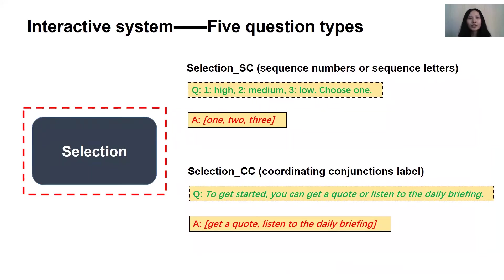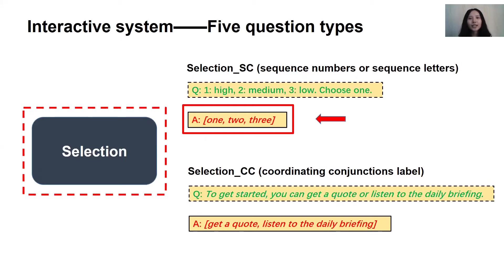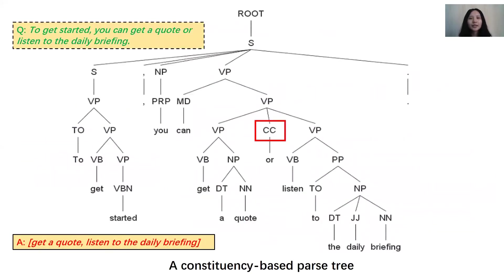Selection questions contain multiple parallel answers. We consider two situations. Selection with explicit best answers are marked by indicators such as numbers or letters — as the example shows, we extract one, two, three as answers. As for selection with coordinating conjunctions (CC), the answers are usually connected by conjunctions such as AND or OR. We extract parallel components connected by the coordinating conjunction OR — for example, 'get a quote' and 'listen to the daily briefing.'